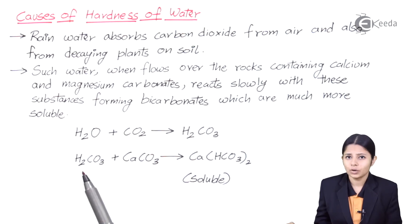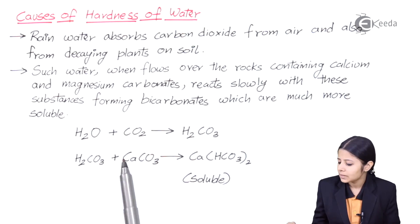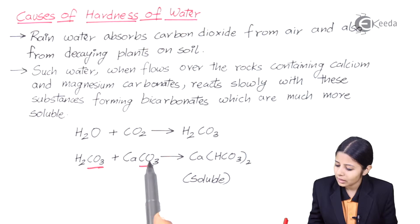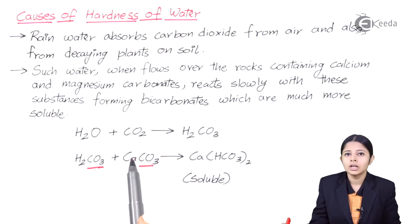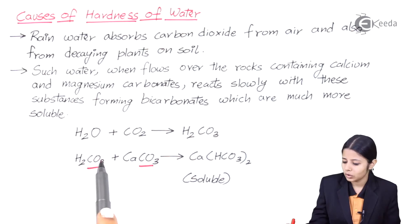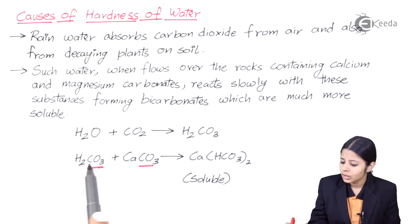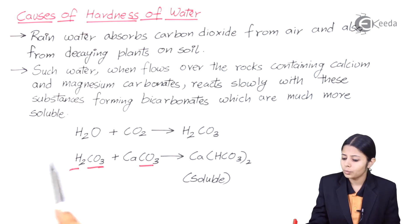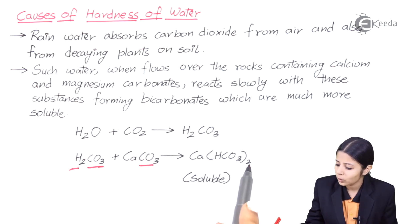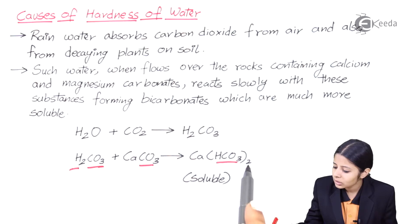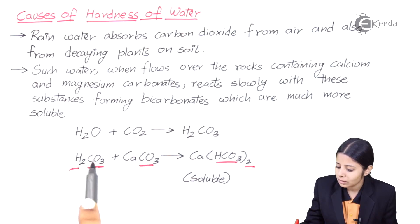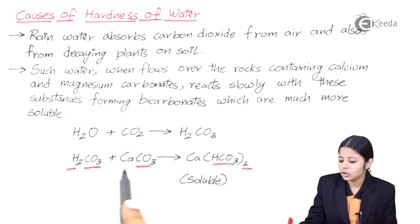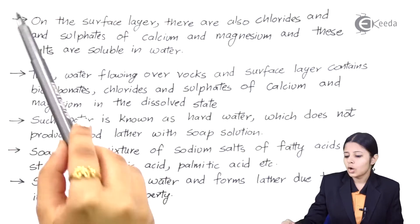Let us see the balancing of this reaction: H2CO3 plus CaCO3. I can see that there are two CO3 groups on the reactant side — I am taking CO3 together as a unit, not individual atoms. I also have two hydrogens. So HCO3 appears twice on the product side. Calcium is one on each side, so the equation is balanced, giving Ca(HCO3)2.